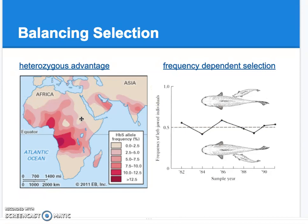Another example of balancing selection is frequency dependent selection. You can click on the links in your notes to watch videos about this. One talks about sickle cell anemia and another is about being left-handed — why, if there's an advantage to being right-handed, do we continue to see the left-handed phenotype in populations? In frequency dependent selection, the frequency of one phenotype depends on the frequency of another.